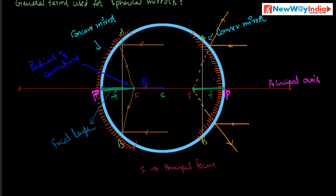These are the important terms related to spherical mirrors. The center of the mirror is called pole. The center of the hollow sphere is the center of curvature. The imaginary line passing through the pole and center of curvature is called the principal axis. The point where reflected rays meet on the principal axis is called principal focus. The distance between pole and principal focus is called focal length, denoted by small f, and the distance between pole and center of curvature is called radius of curvature.